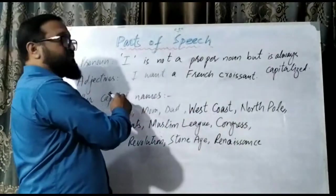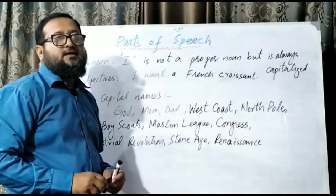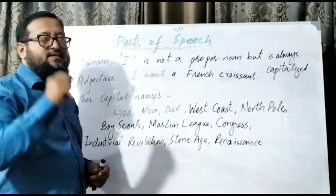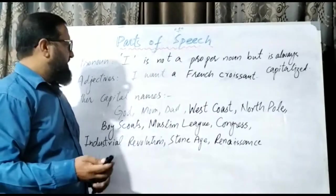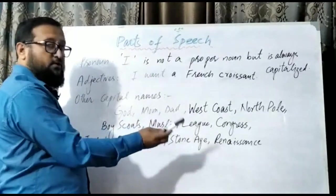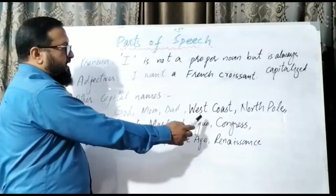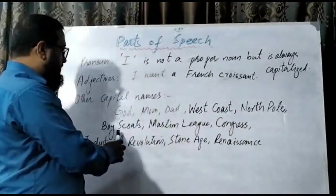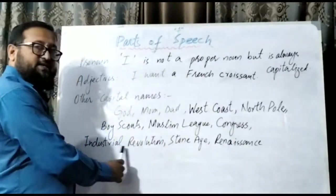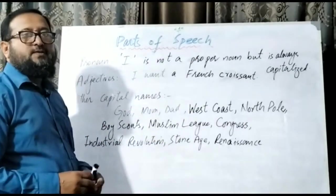Adjectives — like 'I want a French croissant.' Here, French is an adjective and F must be capitalized. However, there are limitations — not all uses are capitalized. Other capital names include deities like God, and personal titles like Mom, Dad, Uncle. Also geographical names like West Coast, North Pole; organizations like Boy Scouts, Muslim League, Congress; and historical periods like the Industrial Revolution, Stone Age, or Renaissance — these are specific places and terms where you have to use capital letters.